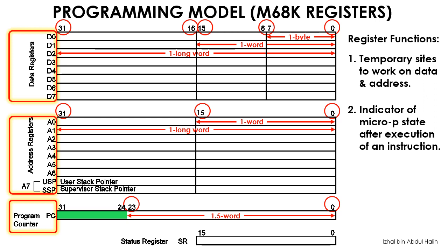Finally, we have a status register. It is also known as the condition code register or the flag register. Its size is 16-bits. The purpose of the status register is to alert the microprocessor on its state after execution of each instruction. The conditions of the status register are also of interest to the programmer, thus we will have a closer look at the status register next.